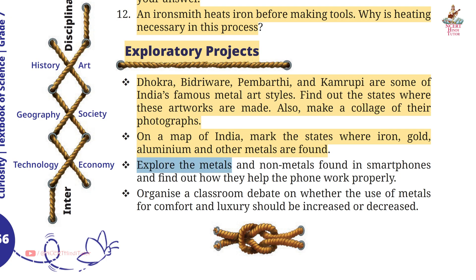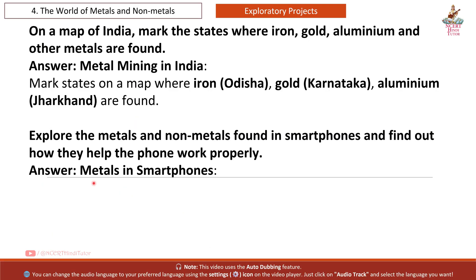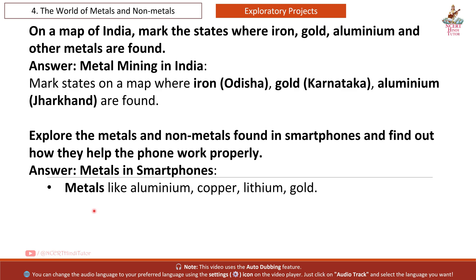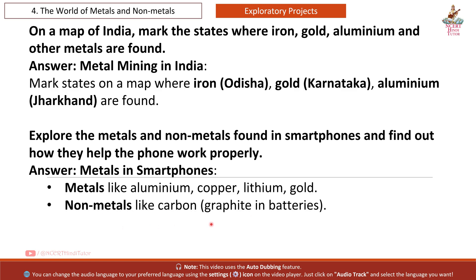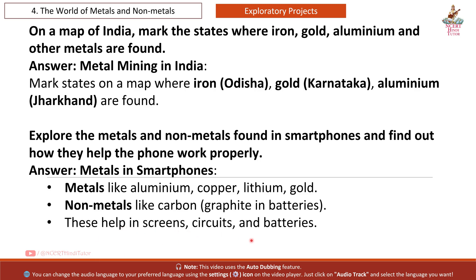Exploratory Project 3: Explore the metals and non-metals found in smartphones and find out how they help the phone work properly. Answer: Metals in smartphones include aluminium, copper, lithium, and gold. Non-metals include carbon and graphite (used in batteries). These help in screens, circuits, and batteries.